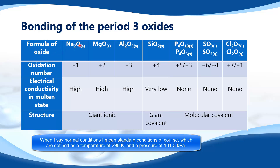Na₂O is sodium oxide. MgO is magnesium oxide. Al₂O₃ is aluminium oxide. SiO₂ is silicon dioxide. P₄O₁₀ is phosphorus pentoxide. P₄O₆ is phosphorus trioxide.